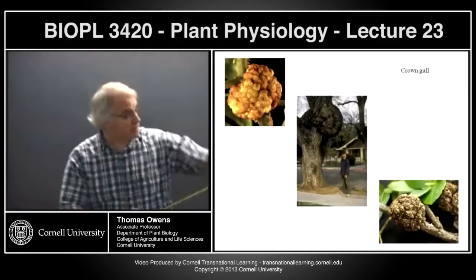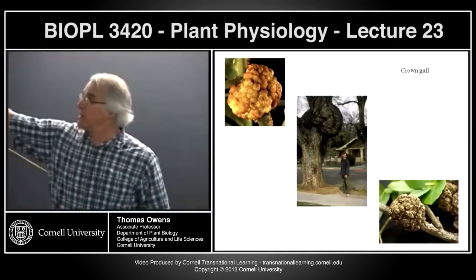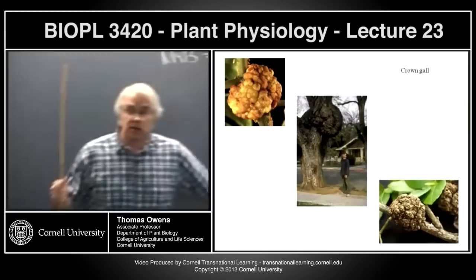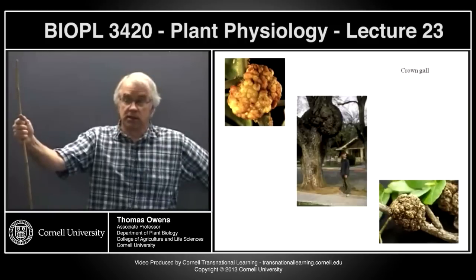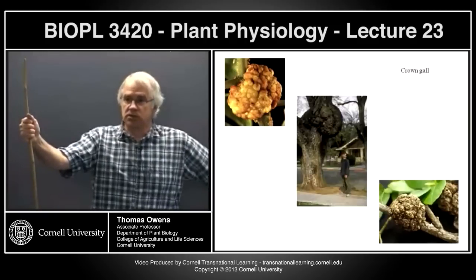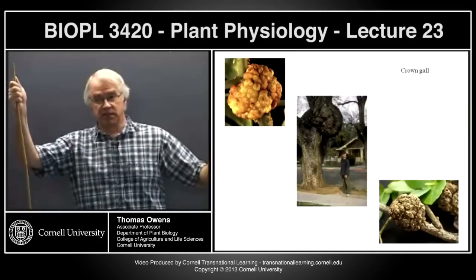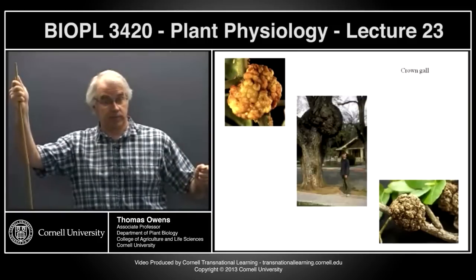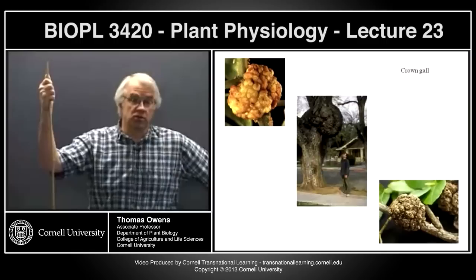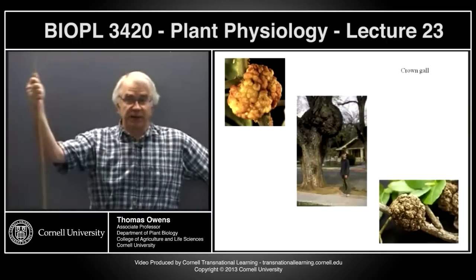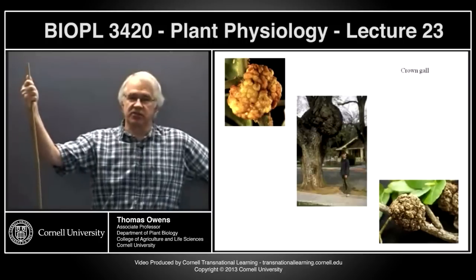Crown galls — you can see them on oak trees along Tower Road. They can be small on smaller plants or giant on trees. Crown gall is probably the closest thing in plants to cancer in animals — it is basically uncontrolled cell division. Whatever normally keeps differentiated plant cells from dividing, when crown gall forms, those controls are released.